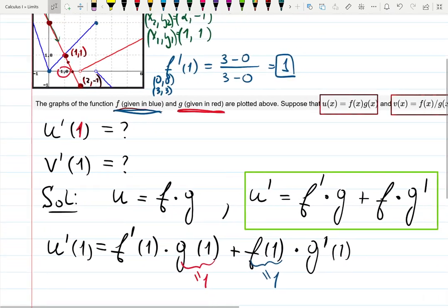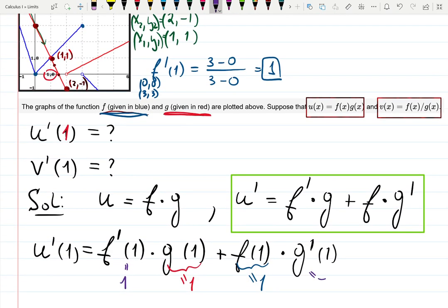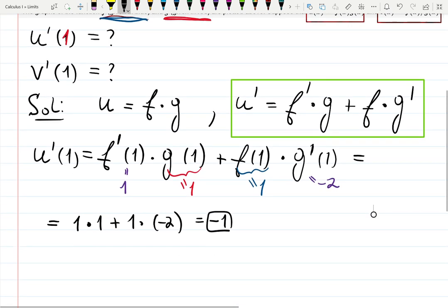Now, we can plug the missing numbers here. I will put them in a purple color. F prime at 1 is 1. G prime at 1 was negative 2. And, we can complete the formula. So, it's going to be 1 times 1 plus 1 times negative 2. That is 1 minus 2, which is minus 1. So, the answer is minus 1. That was the first answer. That was A.